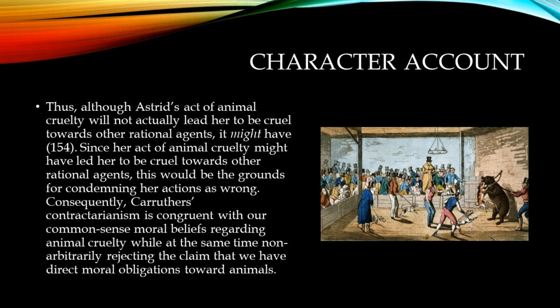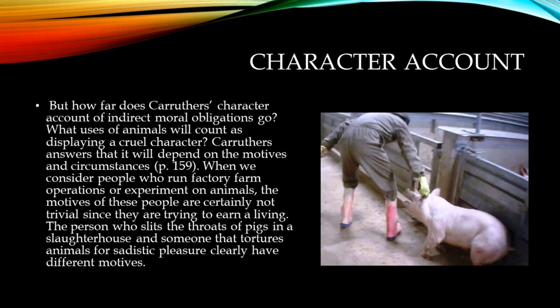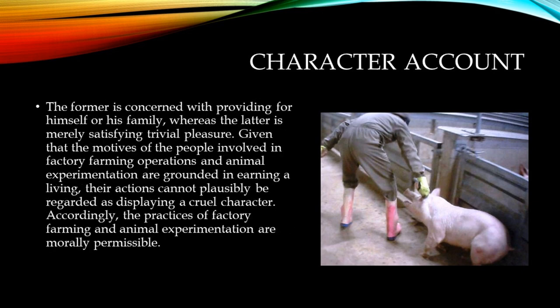Although Astrid's act of animal cruelty will not actually lead her to be cruel towards other rational agents, since it might have, this would be the grounds for condemning her actions as wrong. Consequently, Carruthers' contractualism is congruent with our common-sense moral beliefs regarding animal cruelty, while at the same time non-arbitrarily rejecting the claim that we have direct moral obligations toward animals. How far does Carruthers' character account of indirect moral obligations go? What uses of animals will count as displaying a cruel character? Carruthers' answer is that it depends on the motives and circumstances. When we consider people who run factory farm operations or experiment on animals, the motives of these people are certainly not trivial since they are trying to earn a living. The person who slits the throats of pigs in a slaughterhouse has different motives from someone who tortures animals for sadistic pleasure. Given that the motives of people involved in factory farming and animal experimentation are grounded in earning a living, their actions cannot plausibly be regarded as displaying a cruel character. Accordingly, the practices of factory farming and animal experimentation are morally permissible.